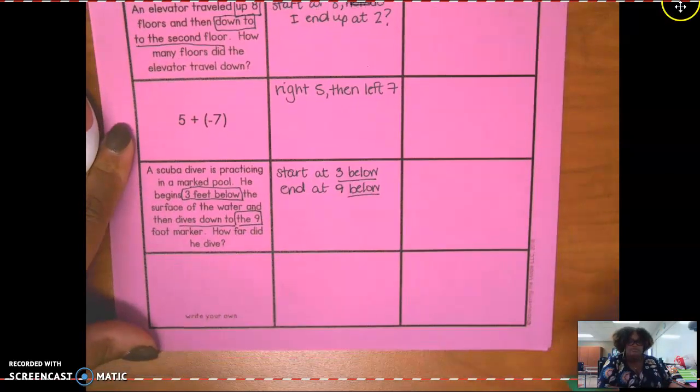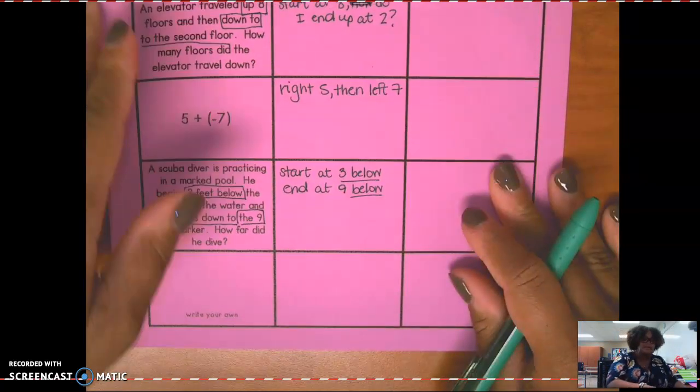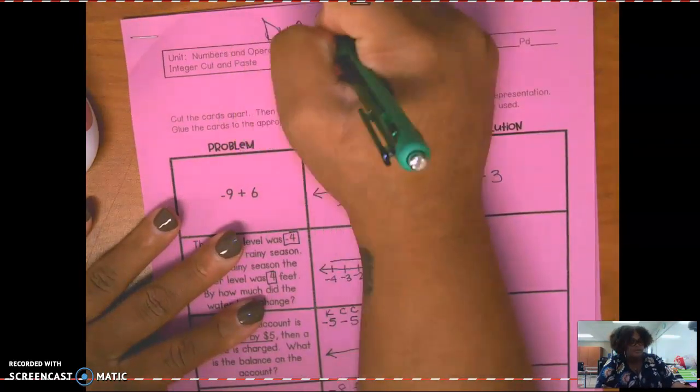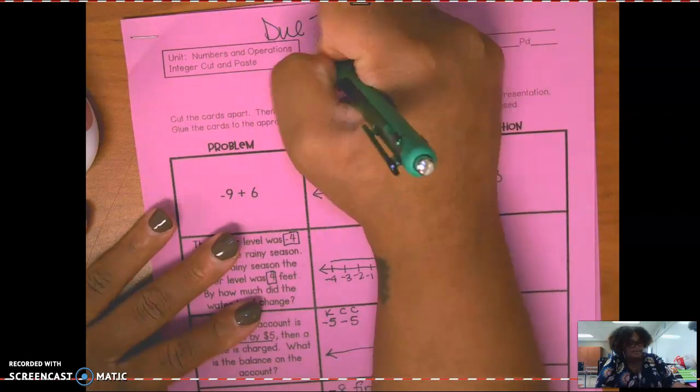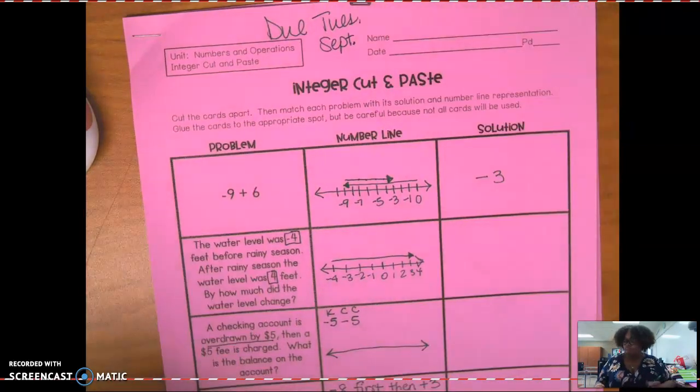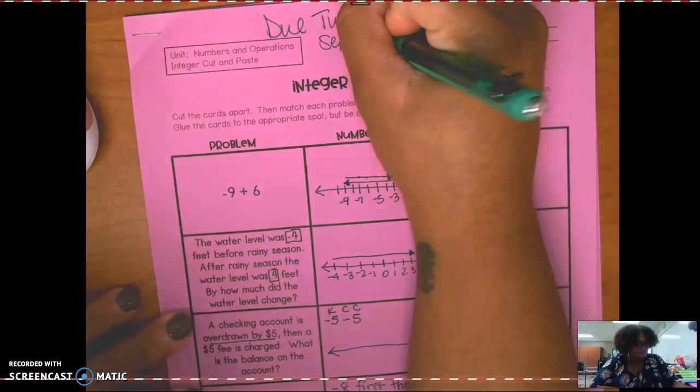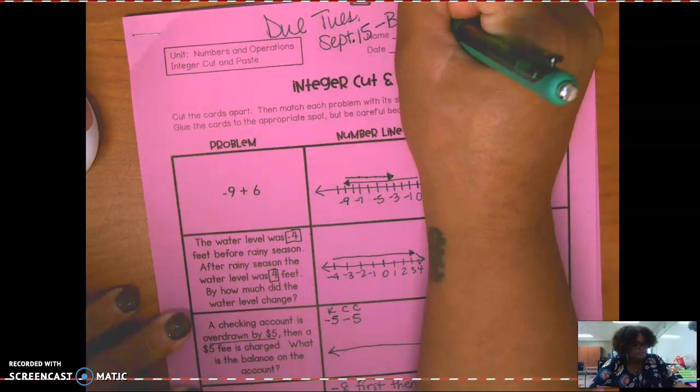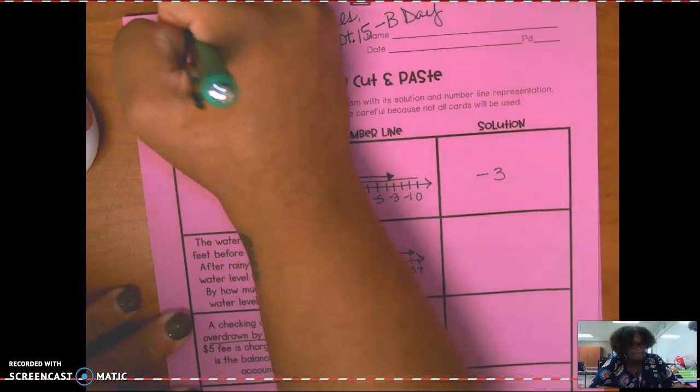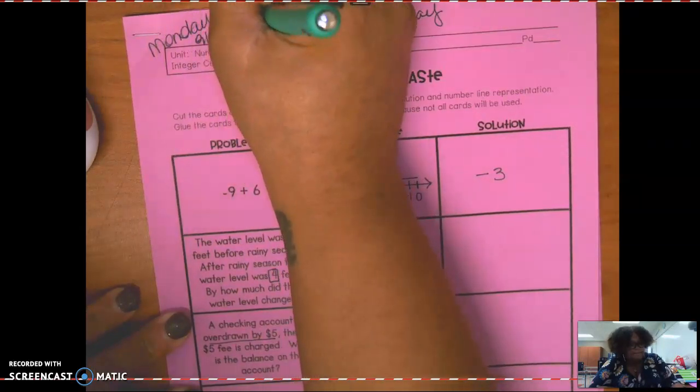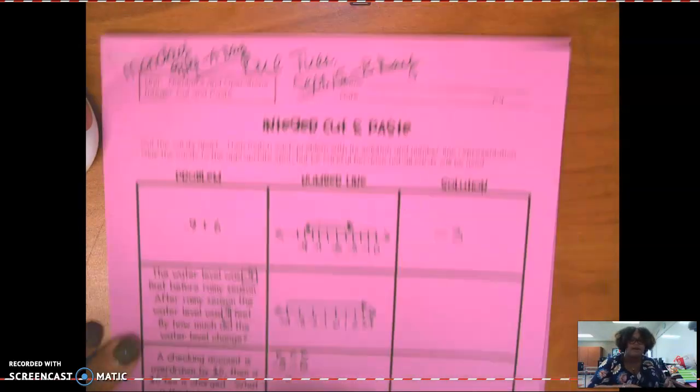And then you can write your own. All right, that's how you complete this assignment. Good luck. Let me know if you have any questions. Your name, date, period should be here. And this is due Tuesday, September 15th for the day and Monday, September 14th for A day. All right, have a great afternoon.